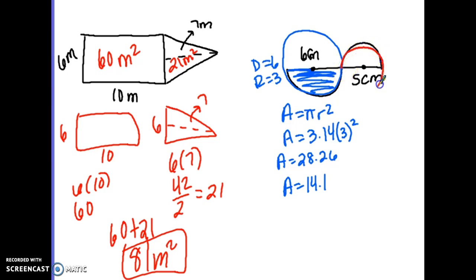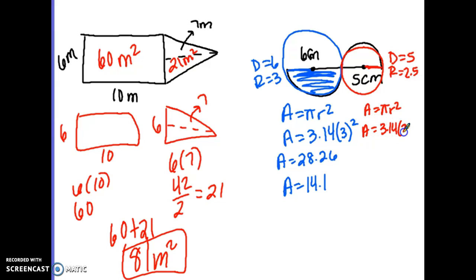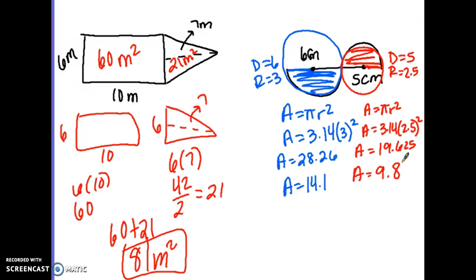Now for the circle with a diameter of 5 — the radius is 2.5. I plug in 3.14 times 2.5 squared, which gives 19.625. That's the whole circle, but I only have half, so I divide by 2 to get 9.8125, which rounds to 9.8. Adding the two semicircle areas together: 14.1 plus 9.8 is 23.9 square centimeters.